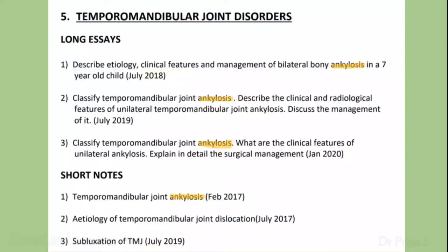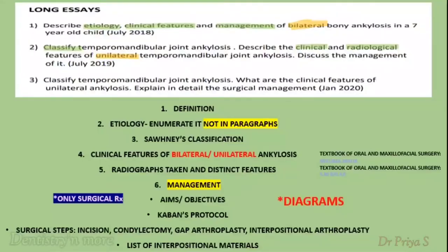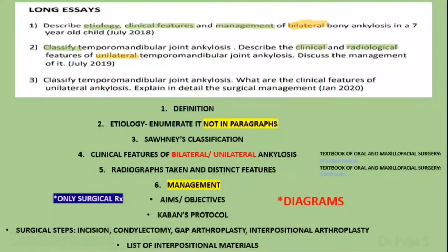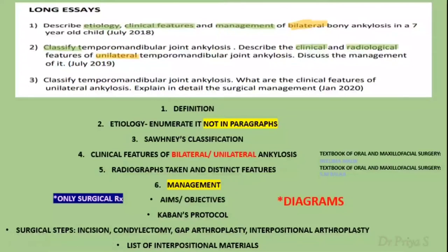The next topic is temporomandibular disorders. The long essay asked consecutively for the last three years is on joint ankylosis. A long essay on joint ankylosis should be answered under the headings: definition, etiology, classification, clinical features, radiographs, and management. Write definitions according to the textbook — do not make your own. Just enumerate etiology without elaborating. For classification, mention one classification, preferably Sawhney's classification, which is grading of TMJ ankylosis based on CT findings. If classification alone is asked for eight marks, write three to four classifications. For clinical features, read the question to determine if bilateral or unilateral ankylosis is asked.